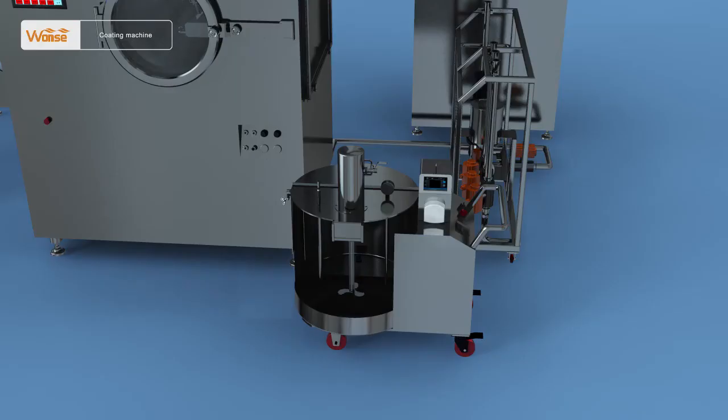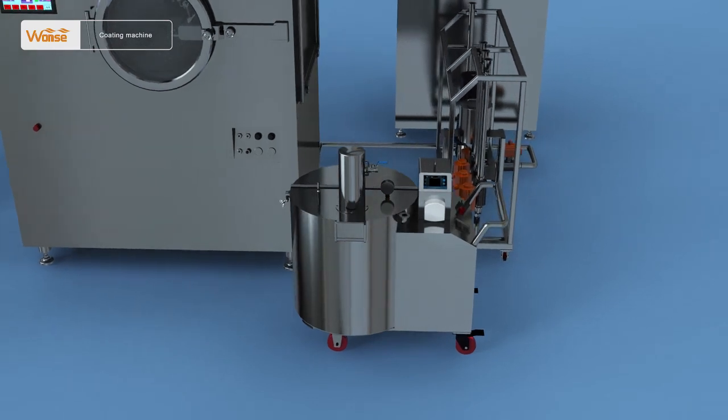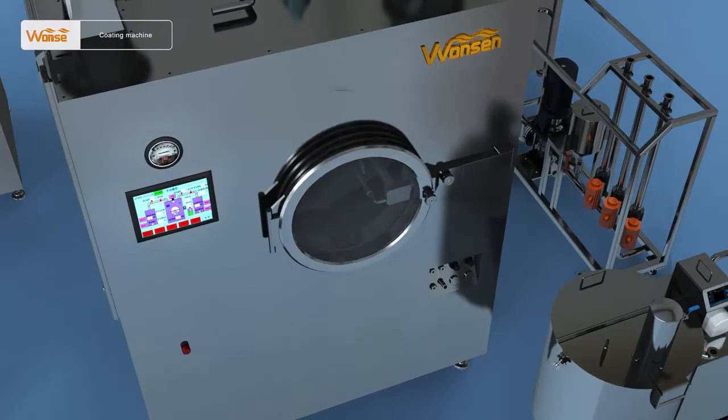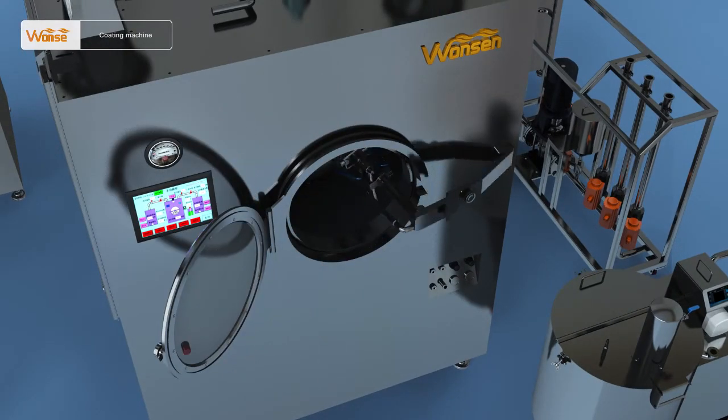The spray optimization system is mainly composed of electric heating, heat insulation mixing tank, constant pressure variable peristaltic pump, and spray gun components.